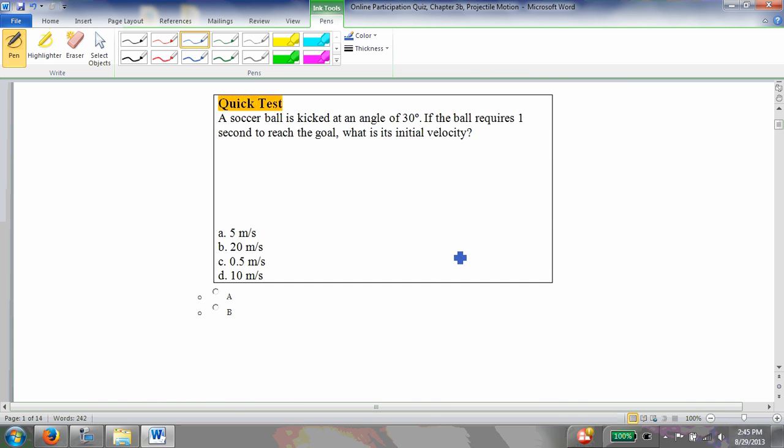I have a soccer ball that's kicked at an angle of 30 degrees. It's kicked at some initial velocity at an angle of 30 degrees, and it's going to follow a path that'll look like this. The ball requires one second to reach the goal, so the time required is equal to one second, and I want to know what is its initial velocity at this point. The initial velocity, that's the magnitude of the initial velocity.